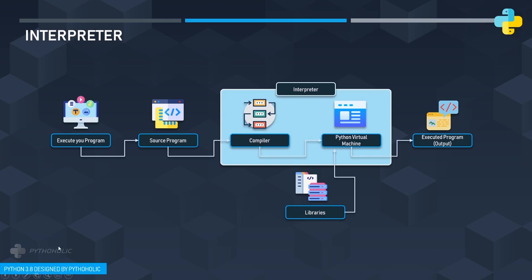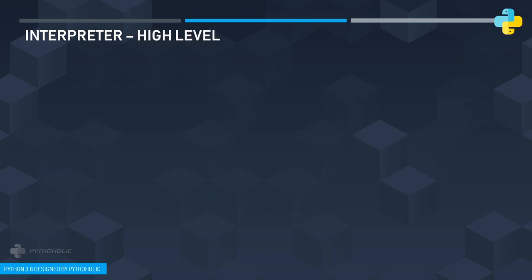Understand that the interpreter still has a compiler, but the compiler has a specific purpose: to generate the byte code that the Python virtual machine can understand, and then generate the output for you.